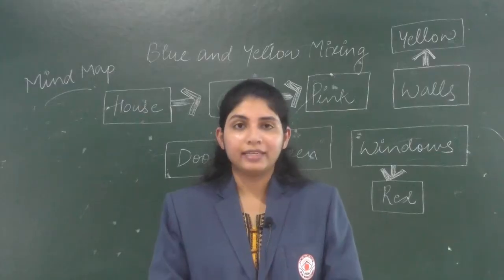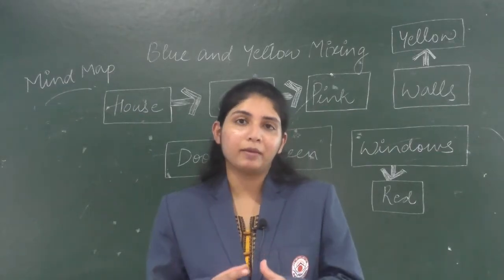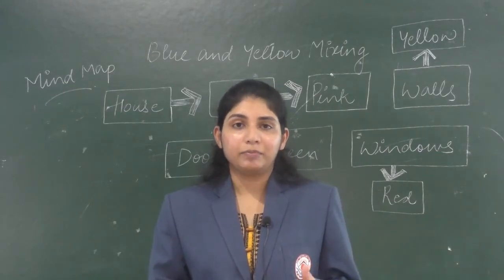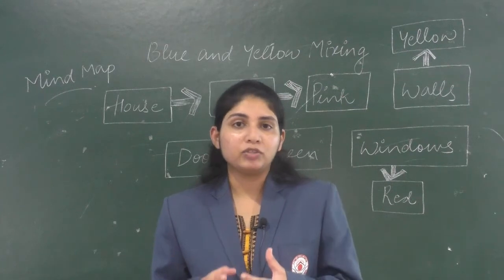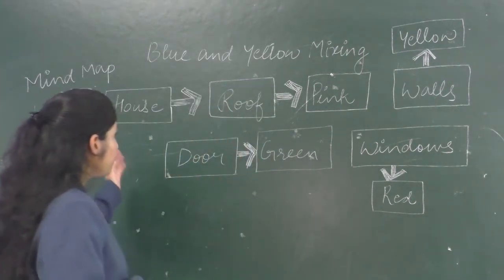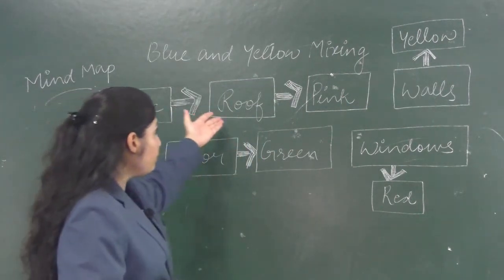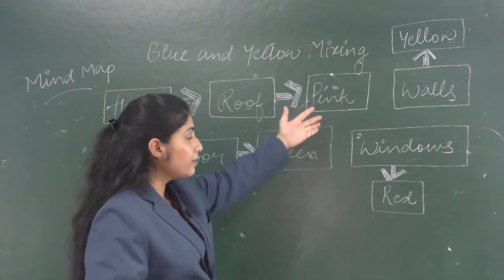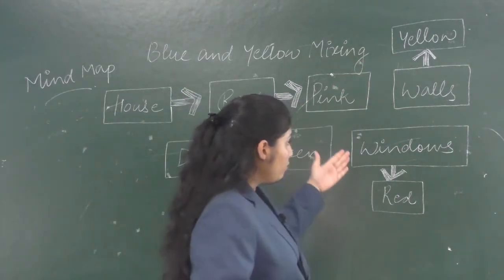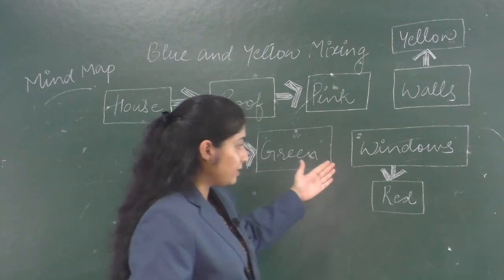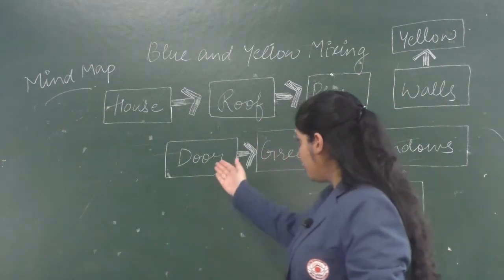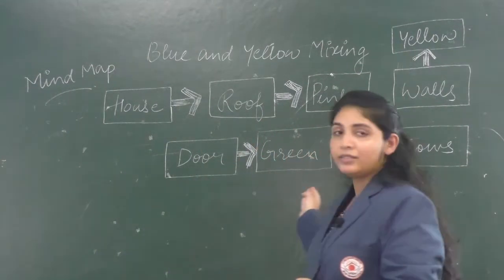Now children, let's see the mind map of this poem, where a girl is painting a picture of a house. The color of the roof is pink, the walls are yellow, the windows are red, and the door is green.